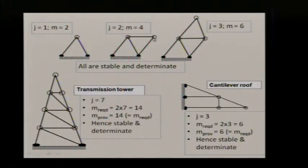Then once again for every new joint, you need 2 new members. J equals 2, m equals 4. For every new joint, you need another 2 members. J equals 3, m equals 6. So that is how it goes.